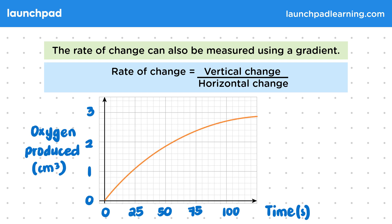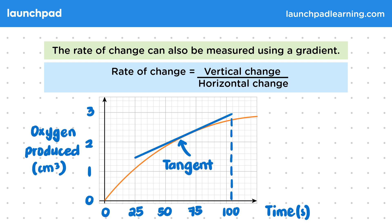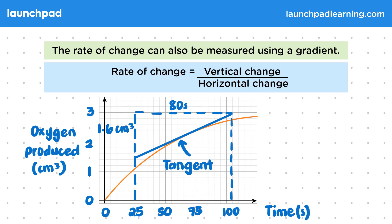The line of best fit for this graph is curved and has a changing gradient. We can draw a tangent at any point on this curve to work out the rate at that point in the experiment. Let's work out the slope of the tangent to the curve by using these dotted lines. The horizontal change will be 80 seconds and the vertical change would be 1.6 centimetres cubed. Applying this to the calculation gives us 1.6 divided by 80, which equals 0.02 centimetres cubed per second.